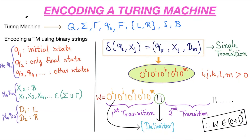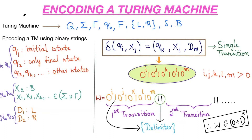We are going to see how to encode a Turing machine. In mathematical model, a Turing machine is represented by eight tuples: Q, sigma, tau, Q-naught, F, direction, and a blank symbol. So these are the eight tuples of a Turing machine.